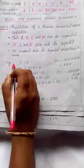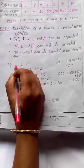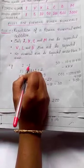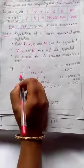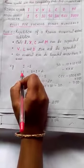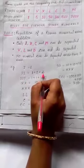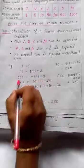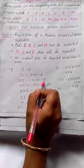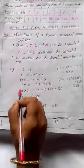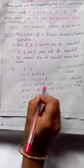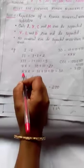Let's look at some examples. I means 1. II means 1 plus 1, which equals 2. III means 1 plus 1 plus 1, which equals 3. XXX means 10 plus 10 plus 10, which equals 30.